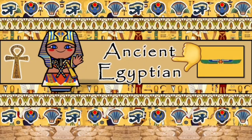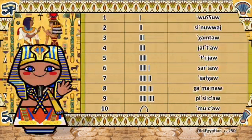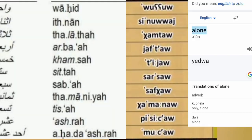The ancient Egyptian language. Numbers. So I said this last time — this word 'w'ow' in ancient Egyptian means 'alone.' And as you can see, 'yedwa' means alone. And if you look right at the bottom of the English-Zulu translation, 'dwa' at the bottom means alone. So it's the 'wa' part.